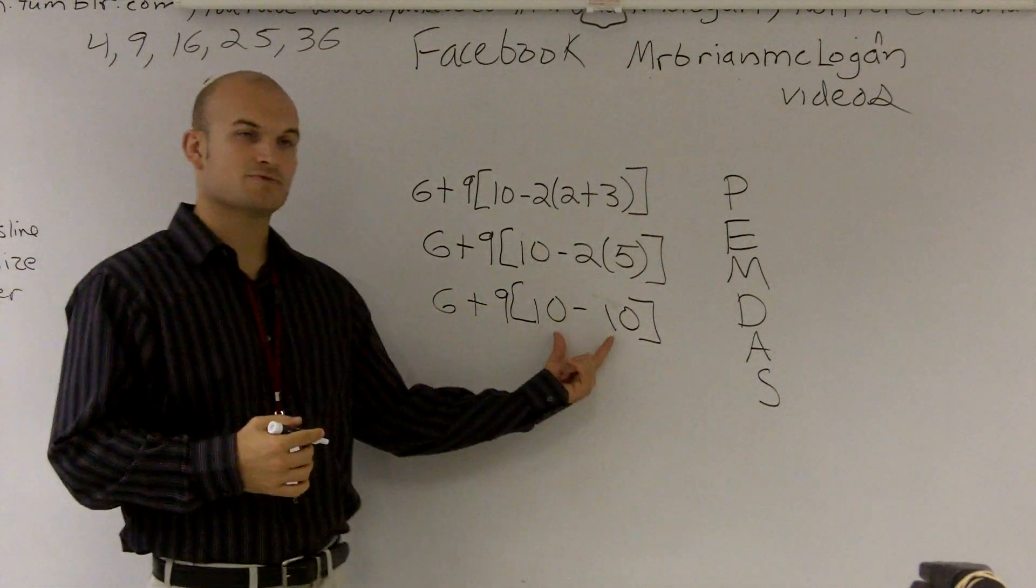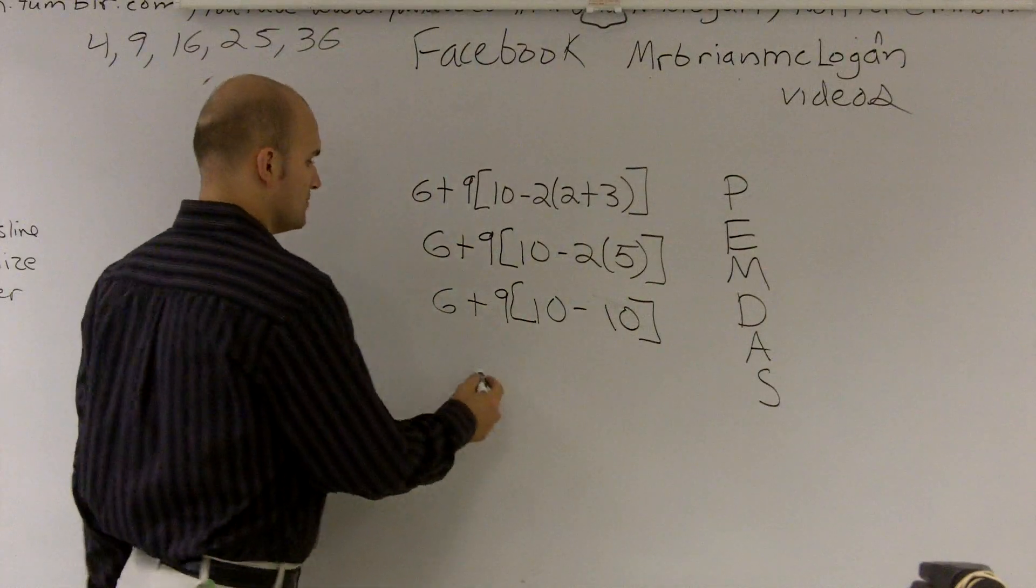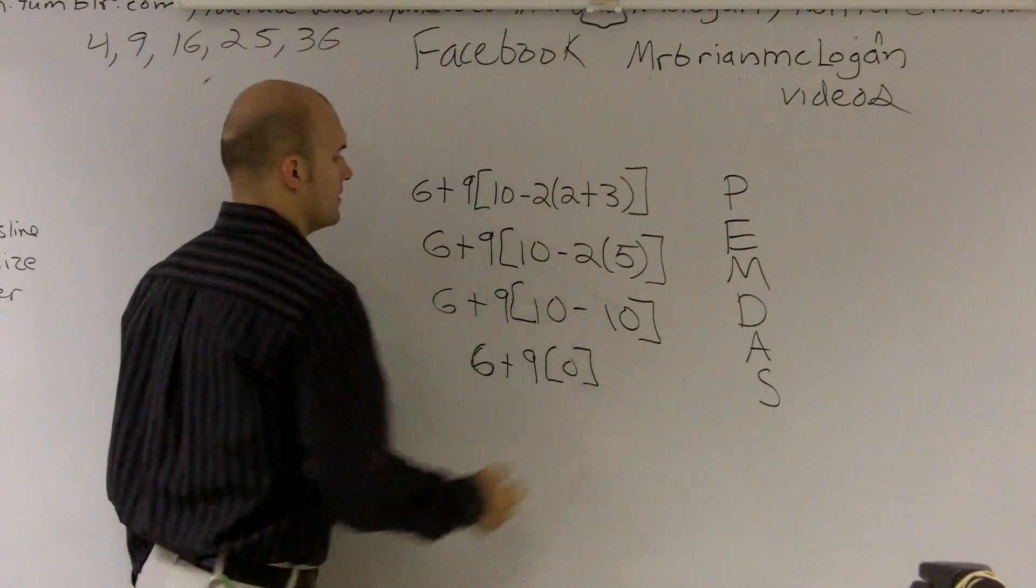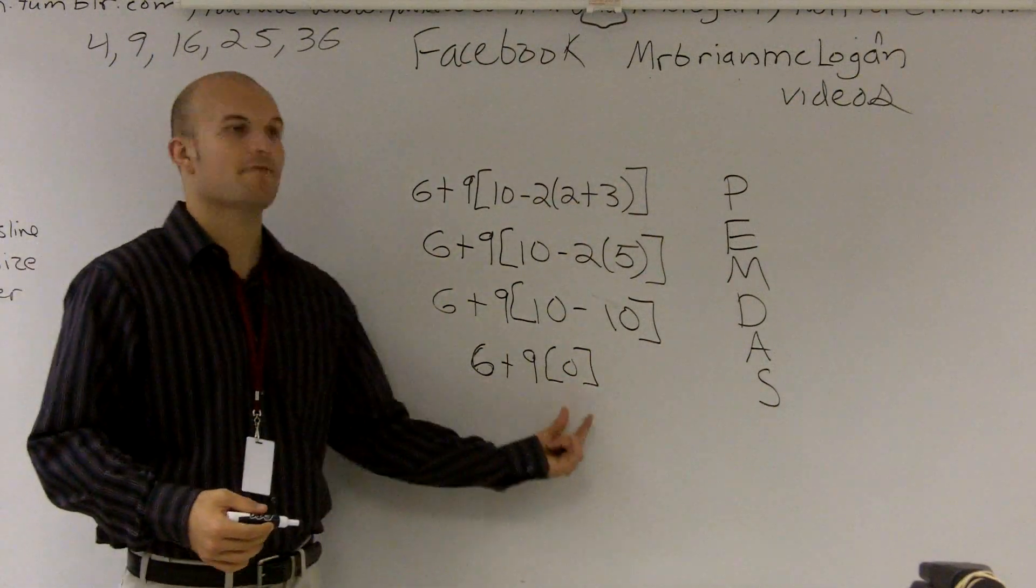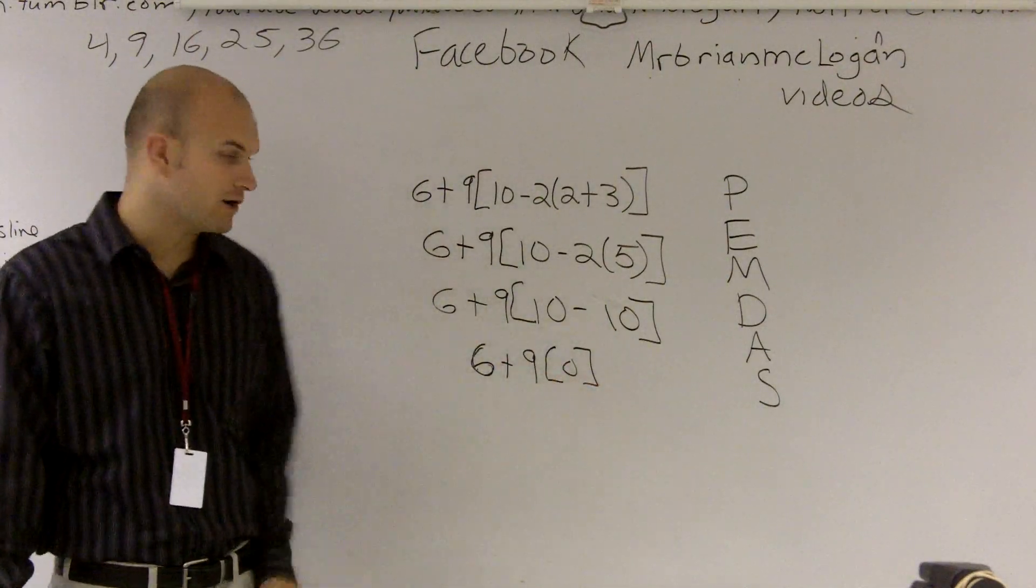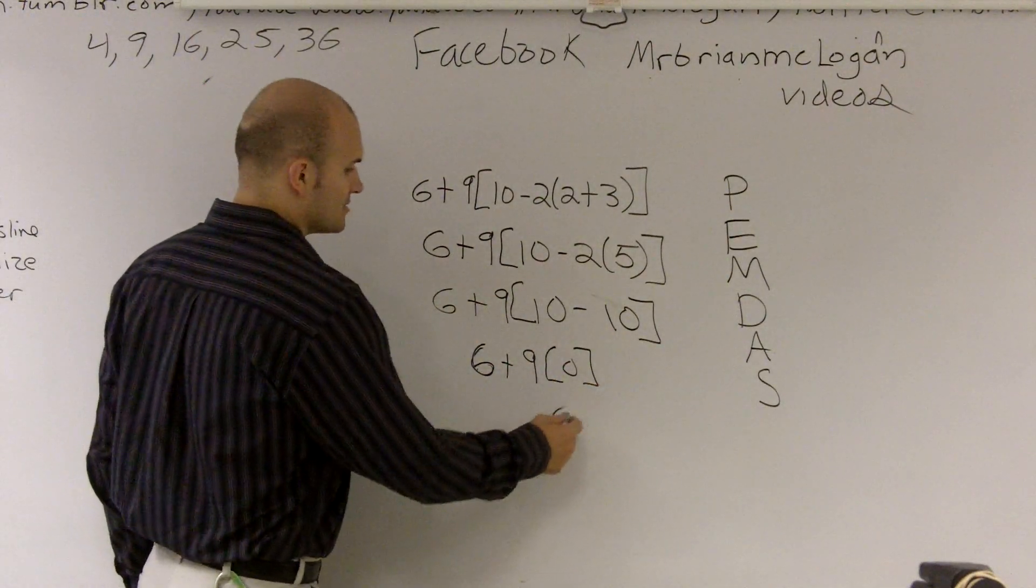All right. Then I can subtract. 10 minus 10 gives me 0. And now I have an addition and I have a multiplication. Well, in this case, I'm going to multiply 9 times 0 is 0 plus 6 is just going to give me 6.